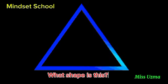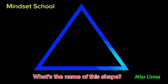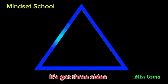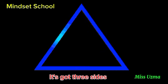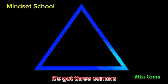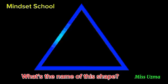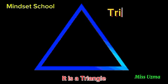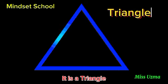What shape is this? What's the name of this shape? It's got three sides. It's got three corners. What's the name of this shape? It is a triangle.